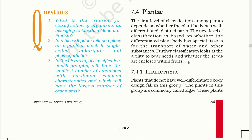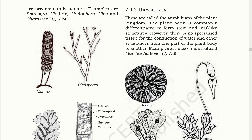The first division, Thallophyta. Plants that do not have well-differentiated body design fall in this group. The plants in this group are commonly called Algae. These plants are predominantly aquatic. Examples are Spirogyra, Ulothrix, Cladophora, Ulva and Chara.